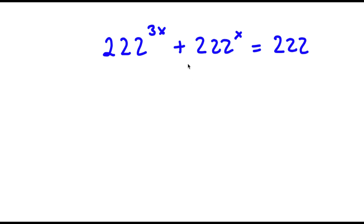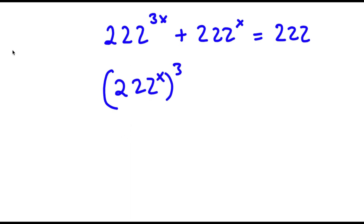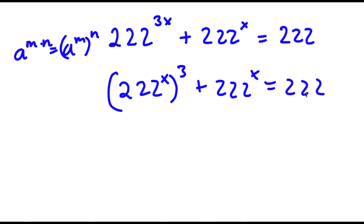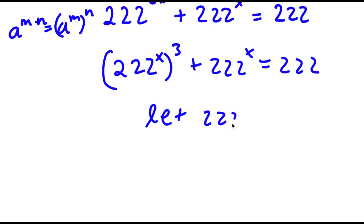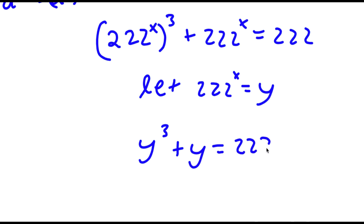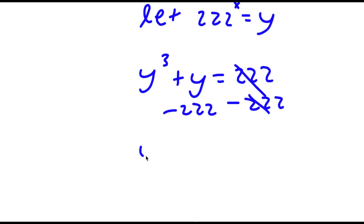So in this problem I have 222 to the power of 3x plus 222 to the power of x is equal to 222. To start, I'm going to rewrite 222 to the power of 3x as 222 to the power of x, to the power of 3. Because if I have something in the form a to the power of m times n, this is equal to a to the power of m to the power of n. So now I have this plus 222 to the power of x is equal to 222. Now I'm going to let 222 to the power of x equal the variable y. So now I have y to the power of 3 plus y is equal to 222. And if I subtract 222 on both sides, I get y to the power of 3 plus y minus 222 is equal to 0.